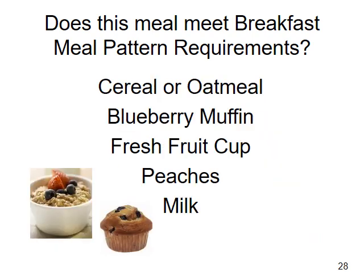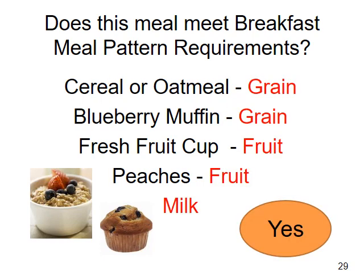This menu offers cereal or oatmeal, a blueberry muffin, a fresh fruit cup, peaches, and milk. Is this menu in compliance? Yes — the cereal and the muffin credit as the grain, the fruit cup and the peaches provide the fruit, and a carton of milk completes the meal. I would want to make sure the cereal portions are large enough to credit as one grain, and you would need documentation to confirm the blueberry muffin is large enough to credit as one grain.